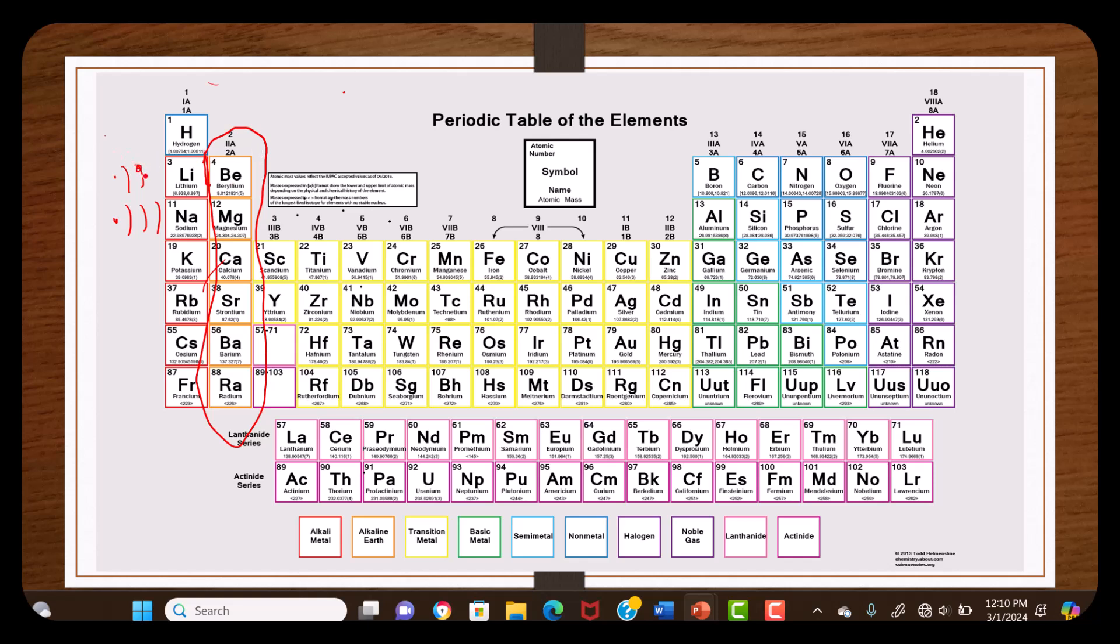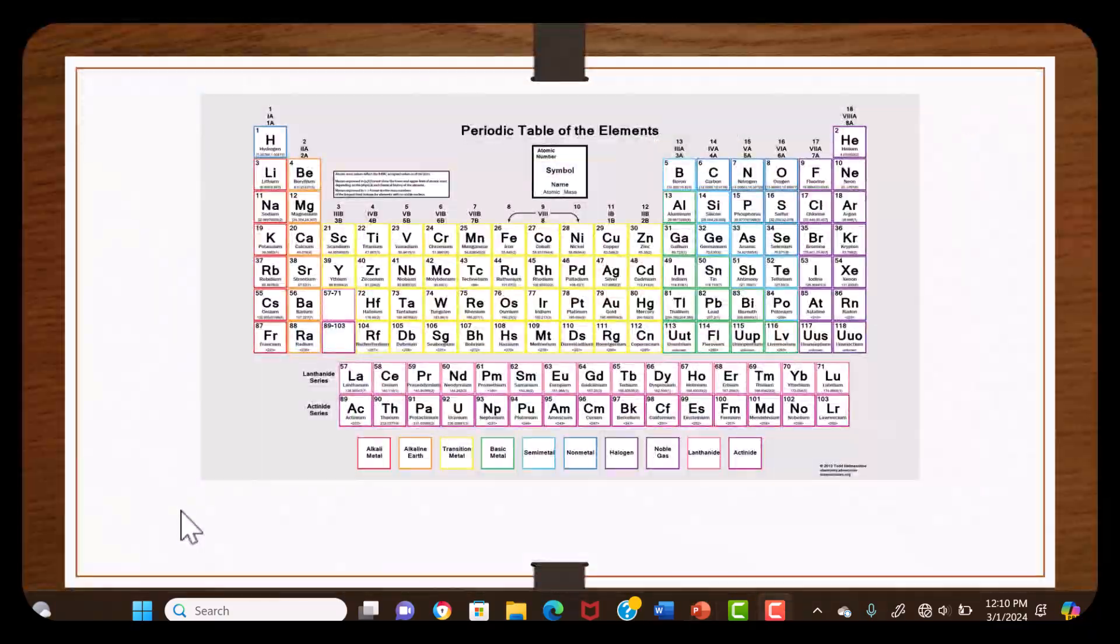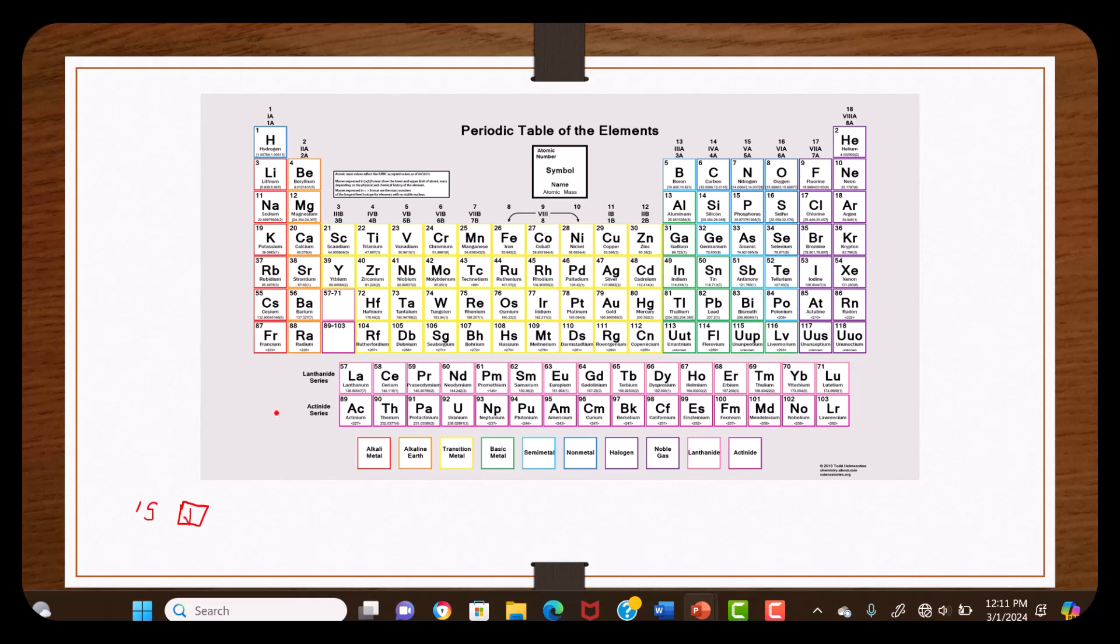We know that an electron is built into the electron configuration through orbitals from the Aufbau principle. We start with the lowest energy value, which would be 1s. One electron would be hydrogen. If we wanted to go to helium, we would put two electrons in an orbital, which would be this box.